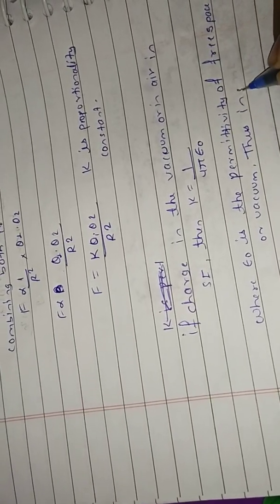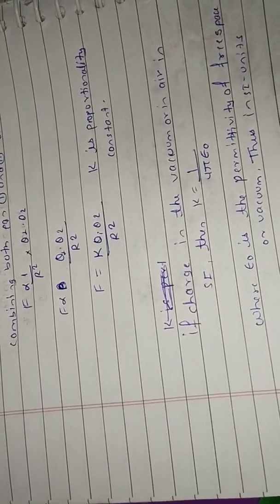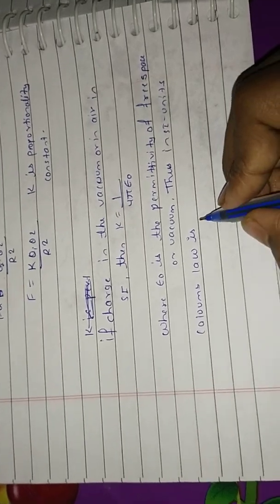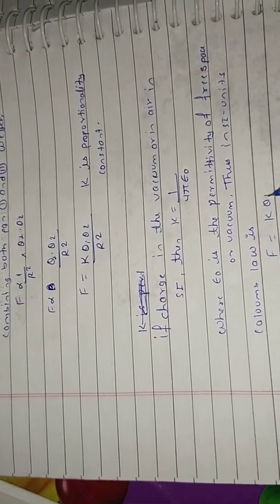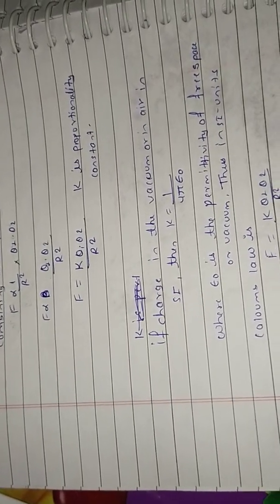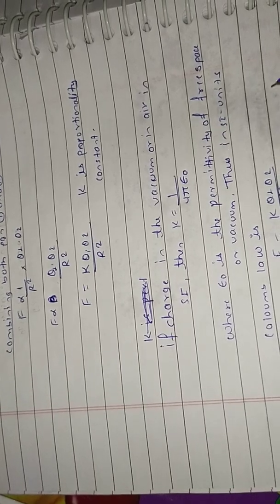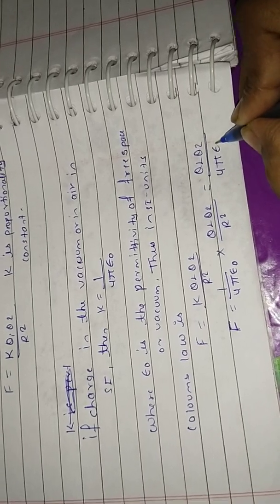Thus, in SI units, Coulomb's law is: putting the value of k into the equation F equals k q1 q2 by r squared, where k means 1 by 4 pi epsilon naught — the permittivity of free space — we get F equals q1 q2 by 4 pi epsilon naught r squared.